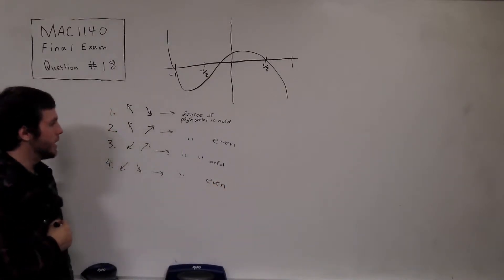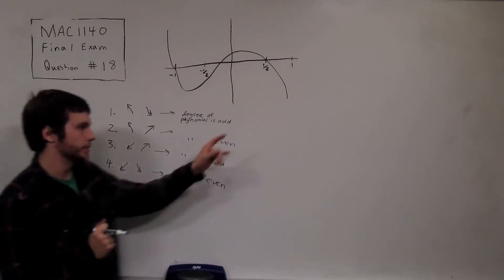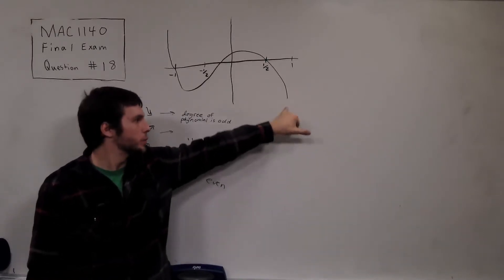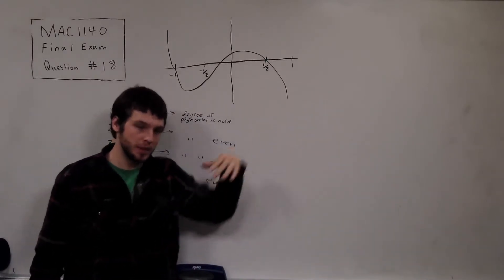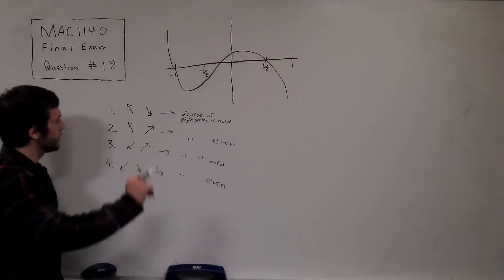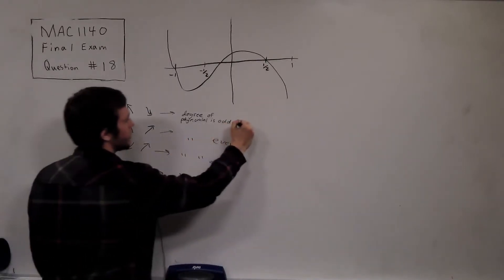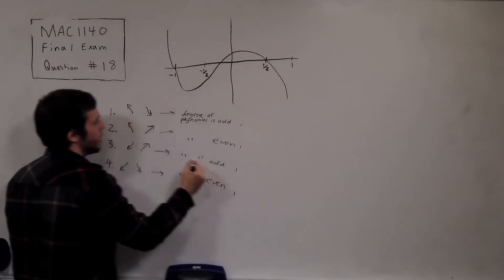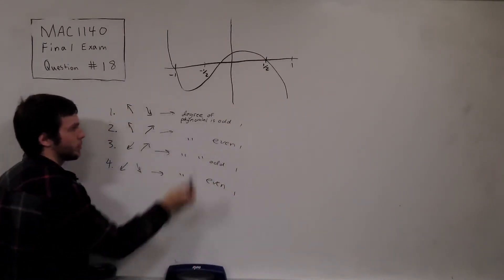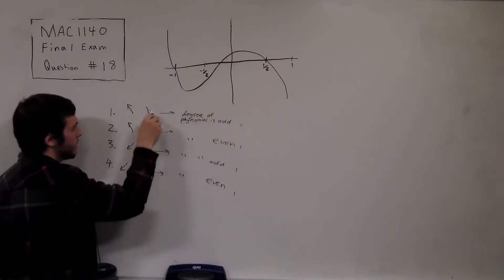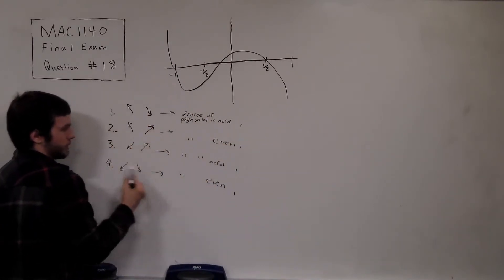And another thing, now for this one, we just look at the right-hand side. If the right-hand side is going down, that means the leading coefficient is negative. So the leading coefficient is negative where the right side points down. So that's case one and case four.